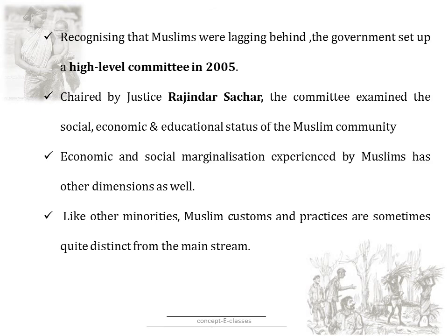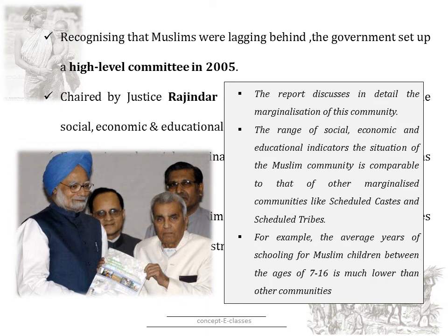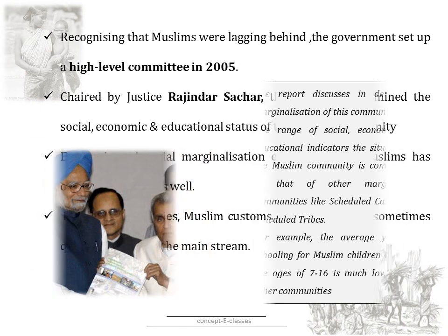Recognizing that Muslims were lagging behind, the government set up a high-level committee in 2005, chaired by Justice Rajinder Sachar. The committee examined the social, economic and educational status of the Muslim community. The report discussed in detail the marginalization of the community, stating that on a range of economic, social and educational indicators, the situation of the Muslim community is comparable to that of other marginalized communities like scheduled castes and scheduled tribes. For example, the average years of schooling for Muslim children between ages 7 and 16 is much lower than many other communities.